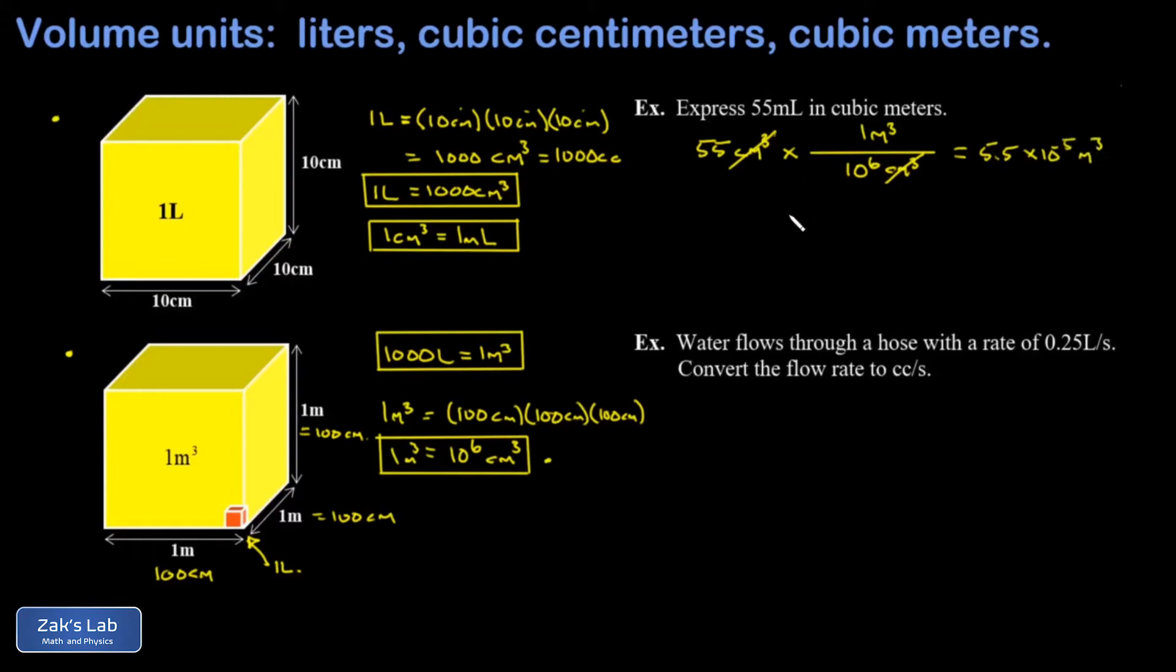Now, another way to handle the same problem is to look at the conversion between centimeters and meters. 100 centimeters for every meter. And it's a really common mistake to stop at this point and write the answer as 0.55. The problem with that is we've only canceled one factor of centimeters when we actually have to cancel three factors of centimeters. So if you're going to use this conversion factor, it has to be included three times to cancel three factors of centimeters. That gives me three factors of meters in the numerator. And again, I have 55 over 10 to the sixth. Then I get the same answer.